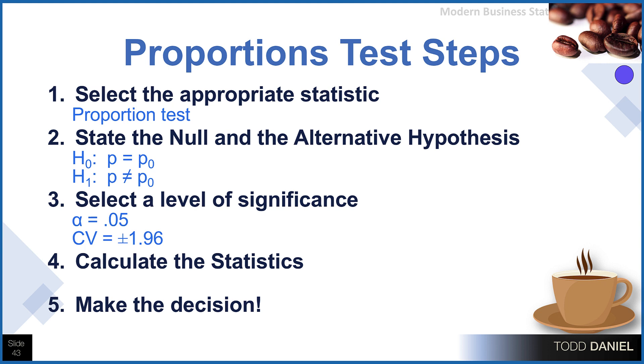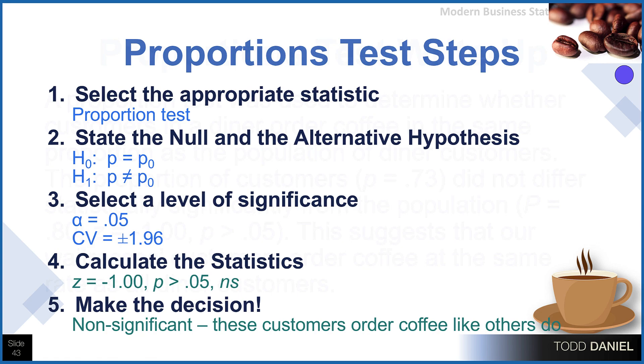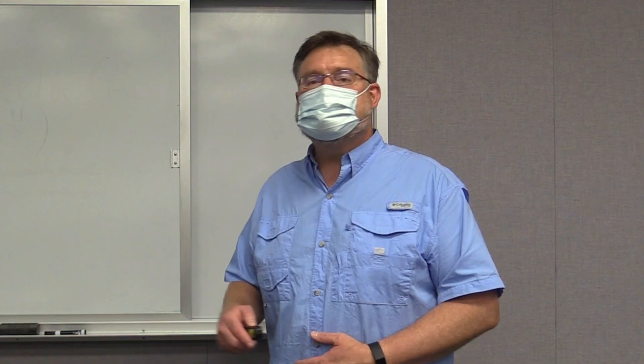And this is how we would walk through the remaining two steps of our five steps of hypothesis testing. For the z of negative 1.00, the proportion is greater than 0.05, a non-significant finding. These customers order coffee like everyone else at Ray's Diner orders coffee, in the same proportion.